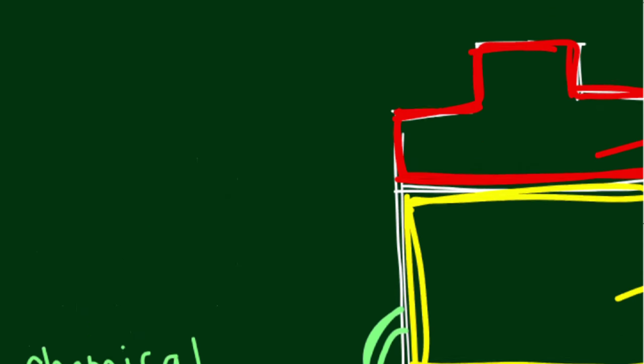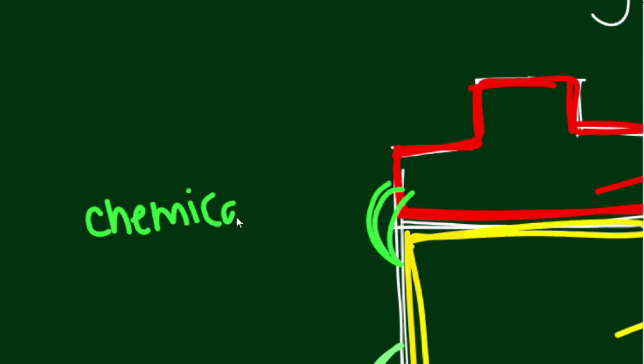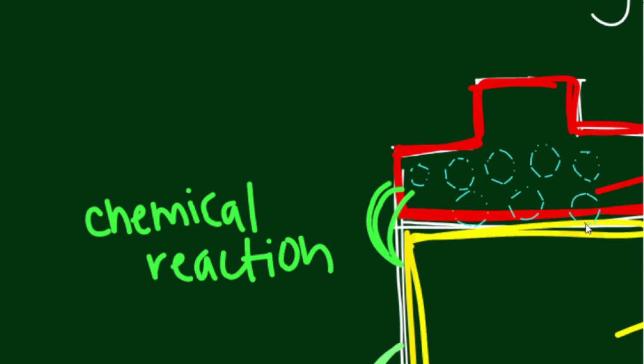In the cathode, the chemical reaction with ions from the electrolyte causes a lack of electrons, making it positive. Now, what we have here is too many electrons in the anode and not enough electrons in the cathode. Naturally, the electrons want to leave the anode and instead enter the cathode.